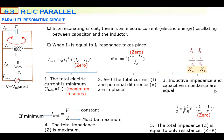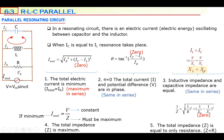In a parallel resonating circuit, total electric current is minimum. But in a series resonating circuit, it is maximum — these are opposite. In both parallel and series resonating circuits, the phase angle difference theta is zero. That is the same. And XL equals XC is also the same in both.